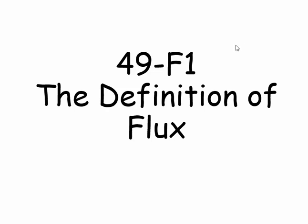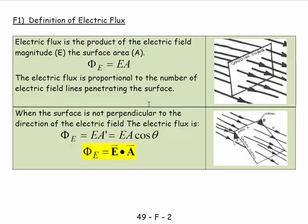Welcome. This is 49F1, the definition of electric flux. Looking at these diagrams, we have a field of electric field lines shown as black arrows. They're parallel with each other, which means it's a uniform field, and we have more arrows for greater field strength.